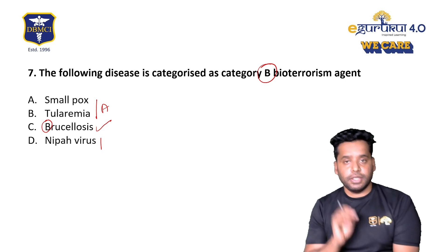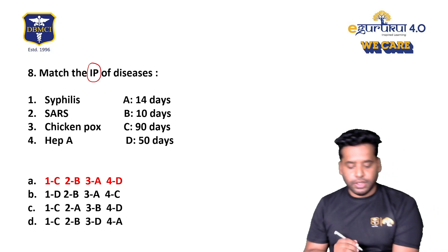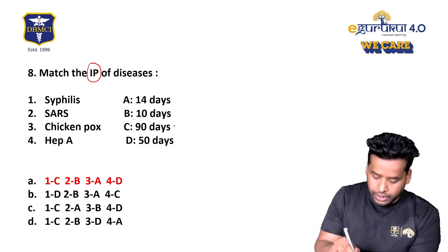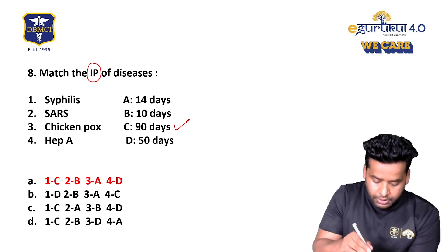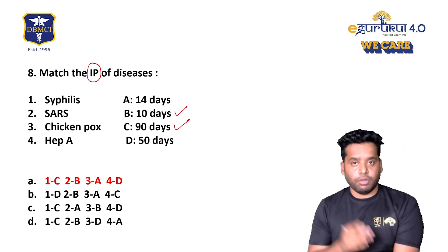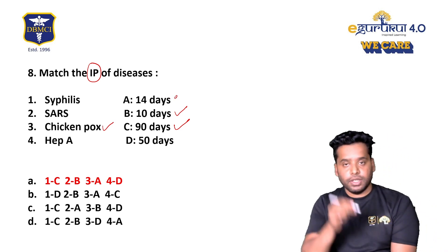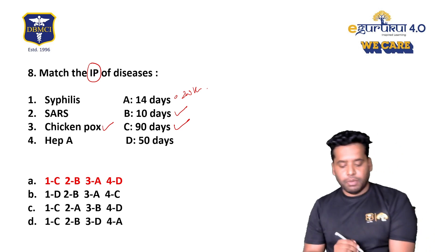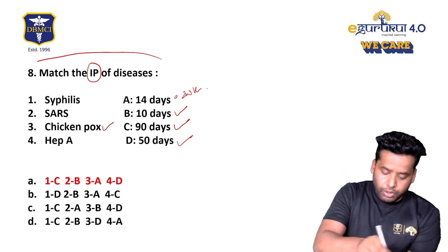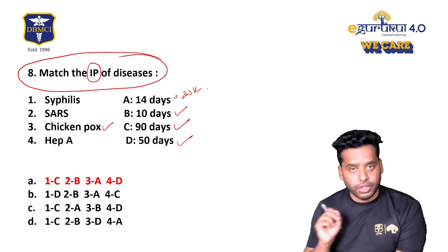Nipah virus goes under Category C. Match the incubation periods of diseases — a memory-oriented question: syphilis is 90 days, SARS is 10 days (acute respiratory syndrome resolves faster), chickenpox is 10–14 days (2 weeks), and hepatitis A is 50 days. Match the following diseases with their corresponding incubation periods.